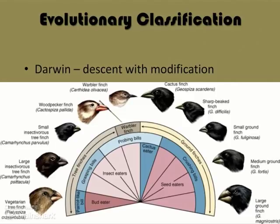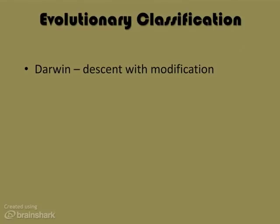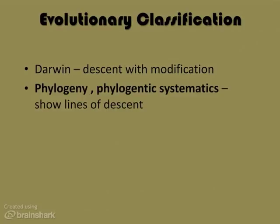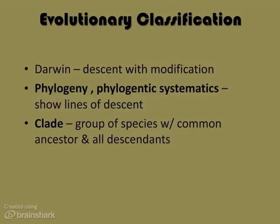However, when organisms are rearranged based on evolutionary trends rather than physical traits, some of Linnaeus' work falls apart. All of this has led biologists to study not just the physical characteristics of an organism, but its phylogeny — or evolutionary relationships — to classify it. Phylogenetic systematics or evolutionary classification shows lines of descent rather than similarities and differences in characteristics.